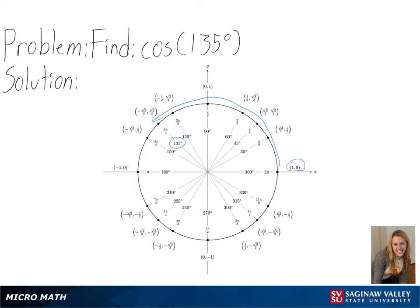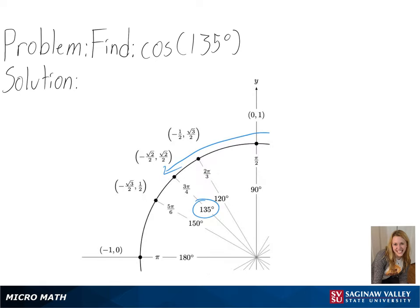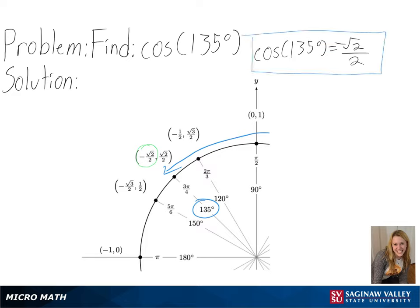Since we are finding the cosine value, we will be taking the x-coordinate of our value, which in this case is negative square root of 2 over 2. So for cosine of 135 degrees, we get negative square root of 2 over 2 as our final answer.